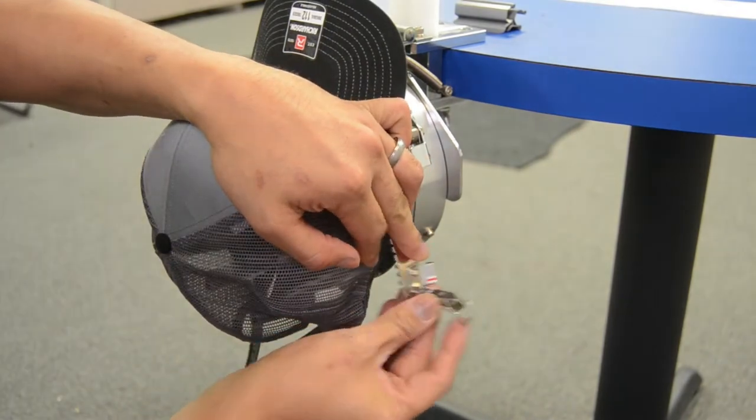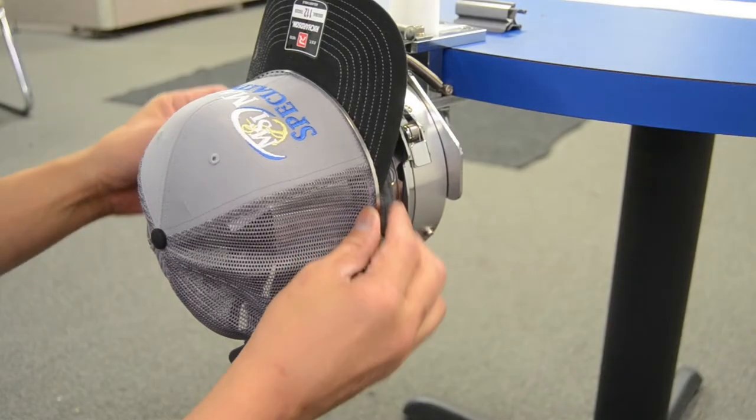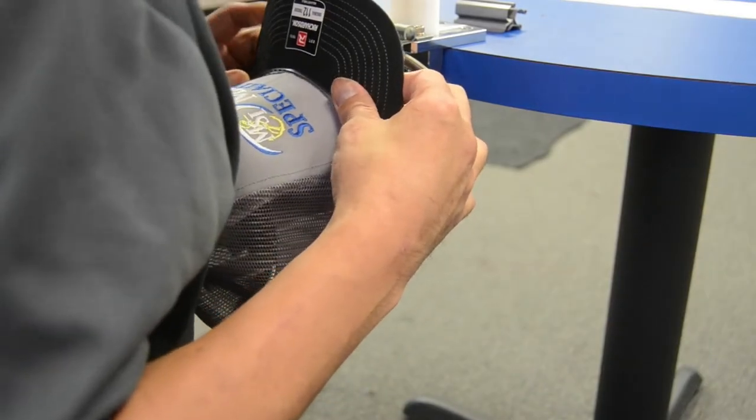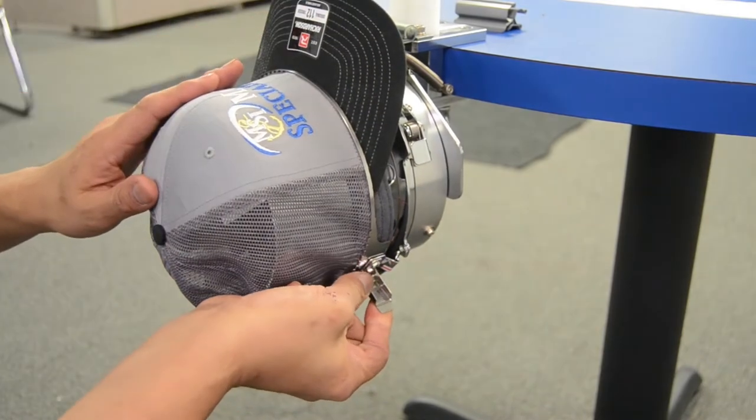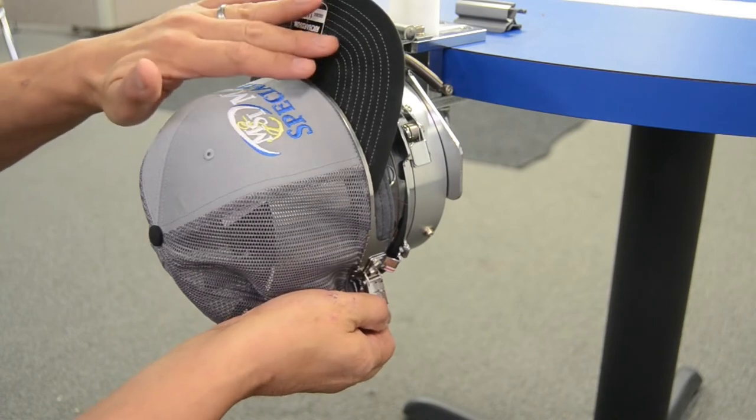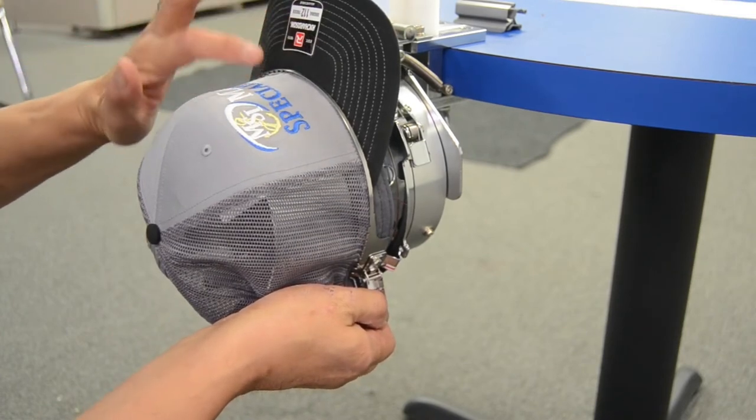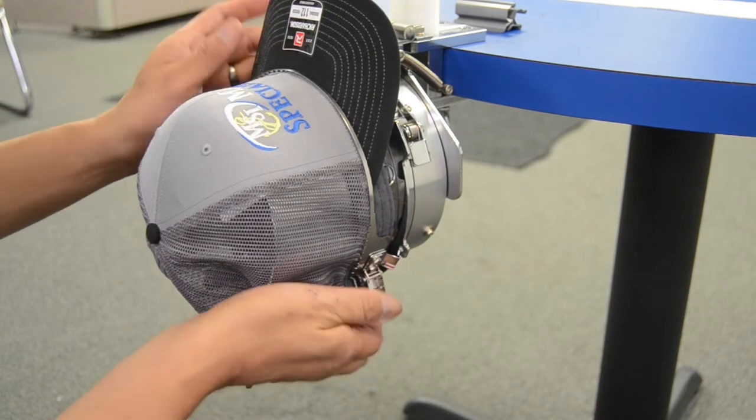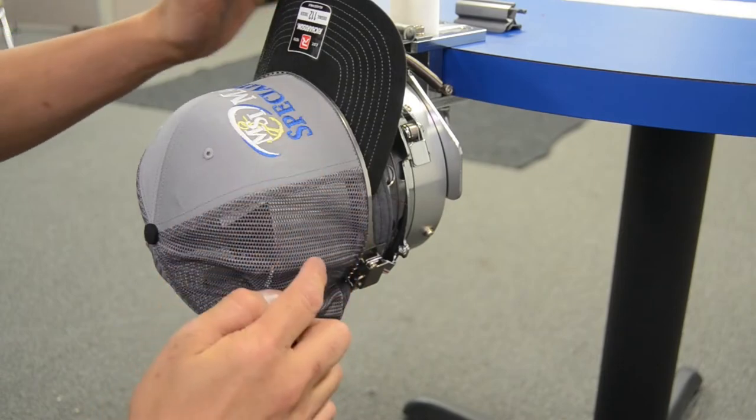Finally, we'll hook our catch onto the little hook at the end here. Check once more for alignment. And finally tighten this down. Be aware that the cap, as we tighten this down, will pull to the right. So make sure that if you need to, you can shift the cap a little bit to the left of the red center mark. So that when you tighten this down, that the center seam of the cap aligns with that center mark.